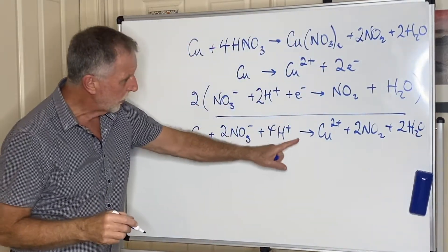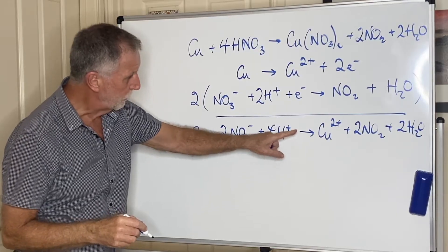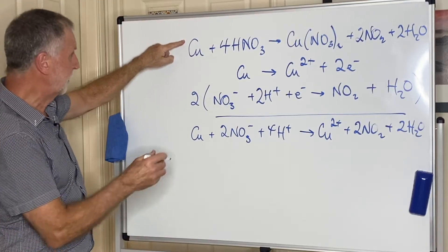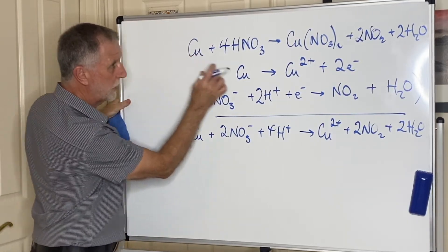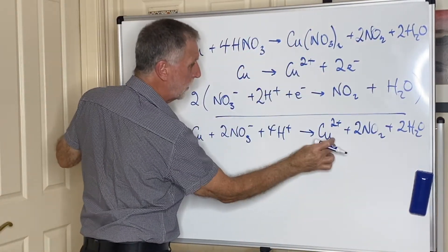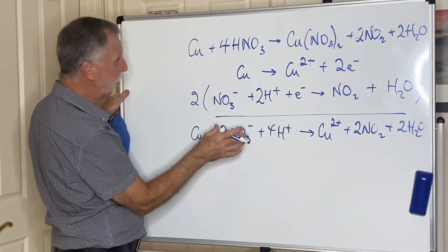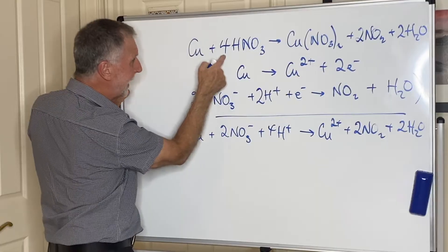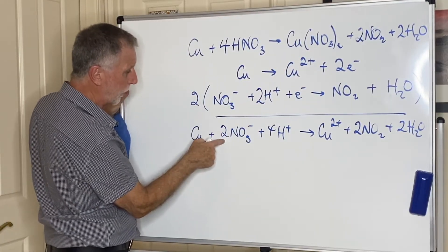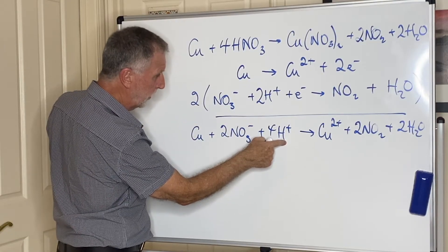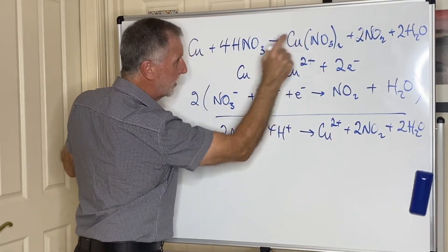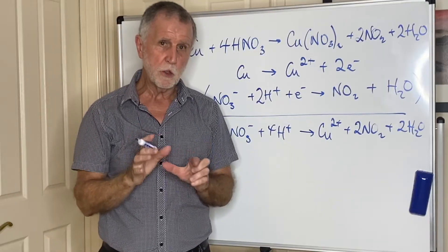What we've just written is the ionic equation version of the original molecular equation. There's a Cu, two NO2s, two H2Os, and a Cu2+. To go from the ionic equation to the molecular equation, you add another two nitrates — making four total — so the four nitrate ions with the 4H+ become 4HNO3, and the two nitrates on the product side convert Cu2+ into Cu(NO3)2. That is how you create that equation.